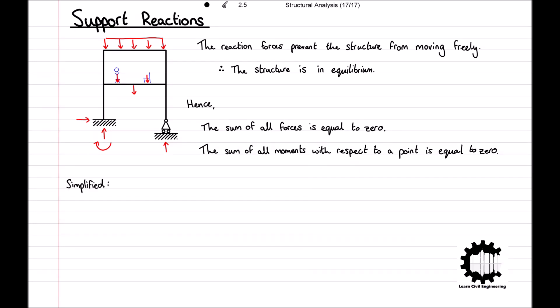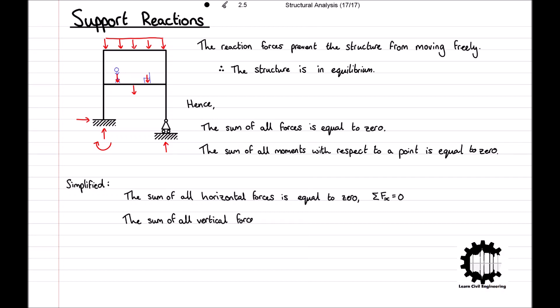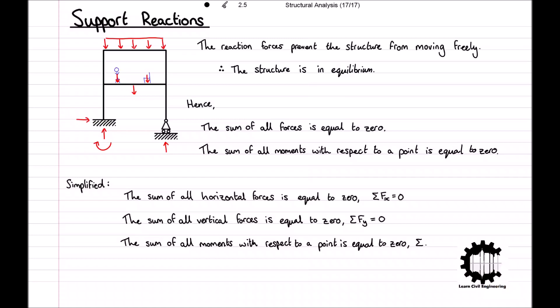To simplify this for a plane structure, we can break this down such that we know the sum of all horizontal forces is equal to zero, the sum of all vertical forces is equal to zero, and the sum of all moments with respect to a point is equal to zero.